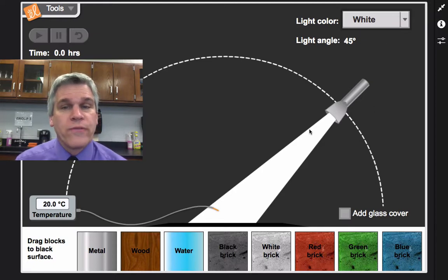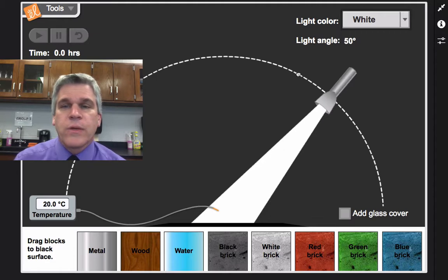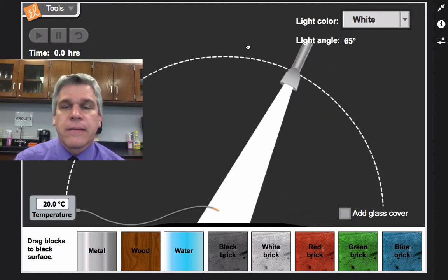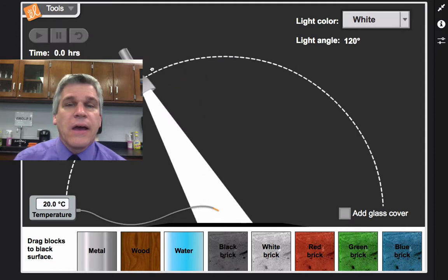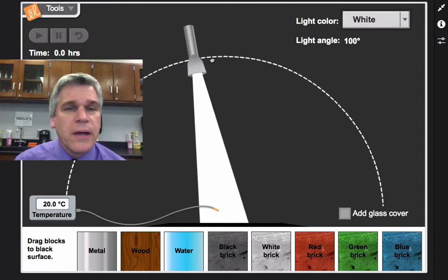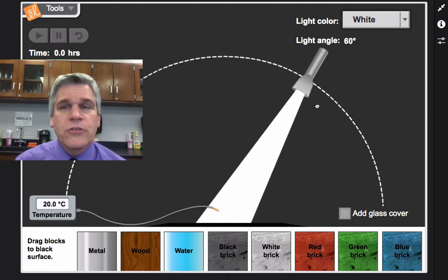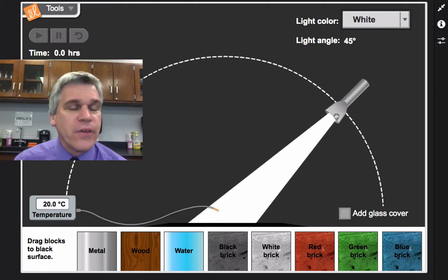That's going to be a controlled variable. I can also change the angle at which the light is shining. And again, I don't want to add another variable. So I'm going to control for this variable and always keep it the same.